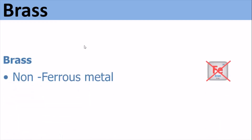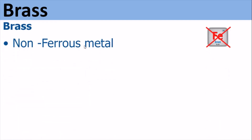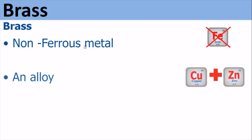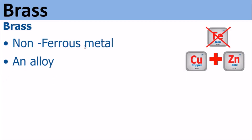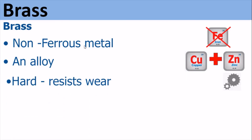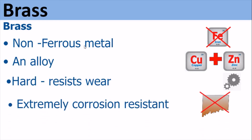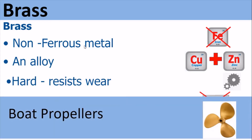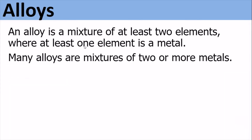Brass. Brass is a non-ferrous metal and an alloy — it is copper and zinc mixed together. It is hard and resists wear. It is extremely corrosion resistant, and because of that it is used for boat propellers.